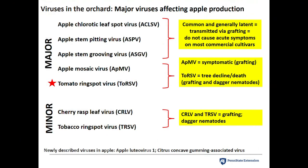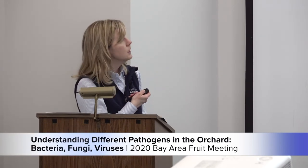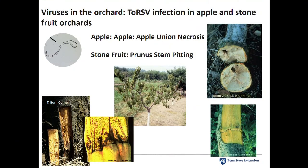The virus most important to you right now is tomato ringspot virus, which can infect peach and apple trees. In apple trees it's called apple union necrosis. In stone fruit it's called prunus stem pitting. In apple, you see death at the graft union tissue, which leads to breakage at the graft union. This incompatibility results from different resistance or tolerance of the virus in the scion wood versus the rootstock. For prunus stem pitting, you'll see pits or grooving in the wood, a line of demarcation between scion and rootstock, and overall tree decline.